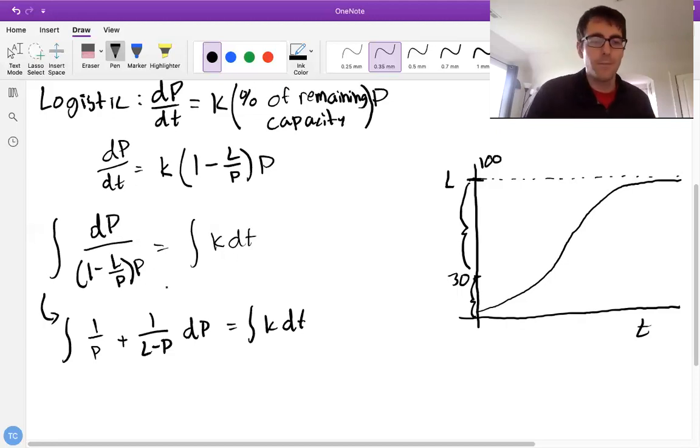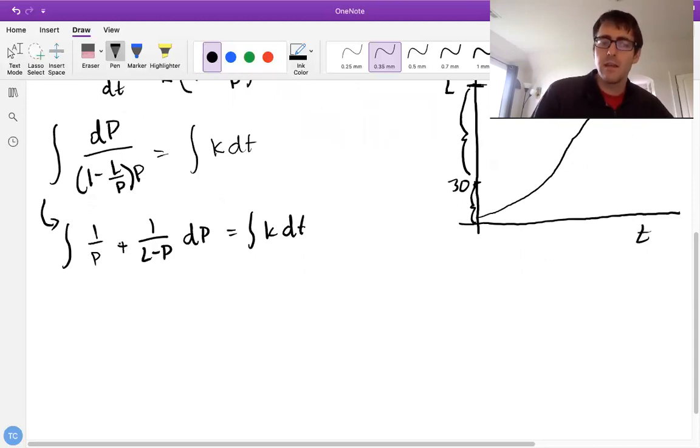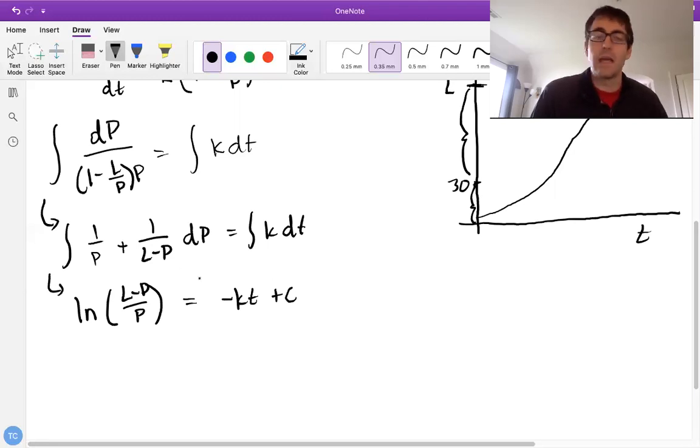And when we integrate both sides, we're going to get an LN of P plus an LN of L minus P. Those LN terms can be combined and we can get something that looks like LN of L minus P over P equals negative KT plus C. So I did a couple steps here. One of them was moving a negative over to flip what this L. It was P over L minus P. I flipped it. It just makes the math easier later. Again, I'm not going through all the steps, but just the headlines.